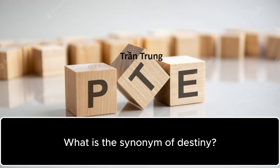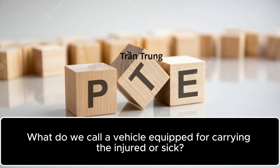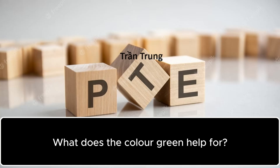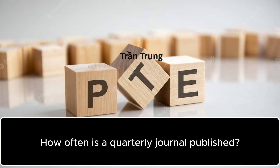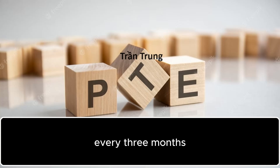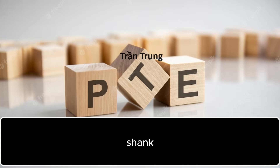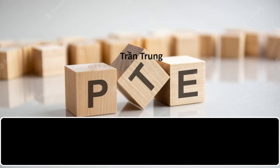What is the synonym of destiny? Fortune. What do we call a vehicle equipped for carrying the injured or sick? Ambulance. What does the colour green help for? Eyesight. How often is a quarterly journal published? Every three months. What is the part of the leg below the thigh? Shank. What do we call the industry which involves designing, building and flying of aircraft? Aviation.